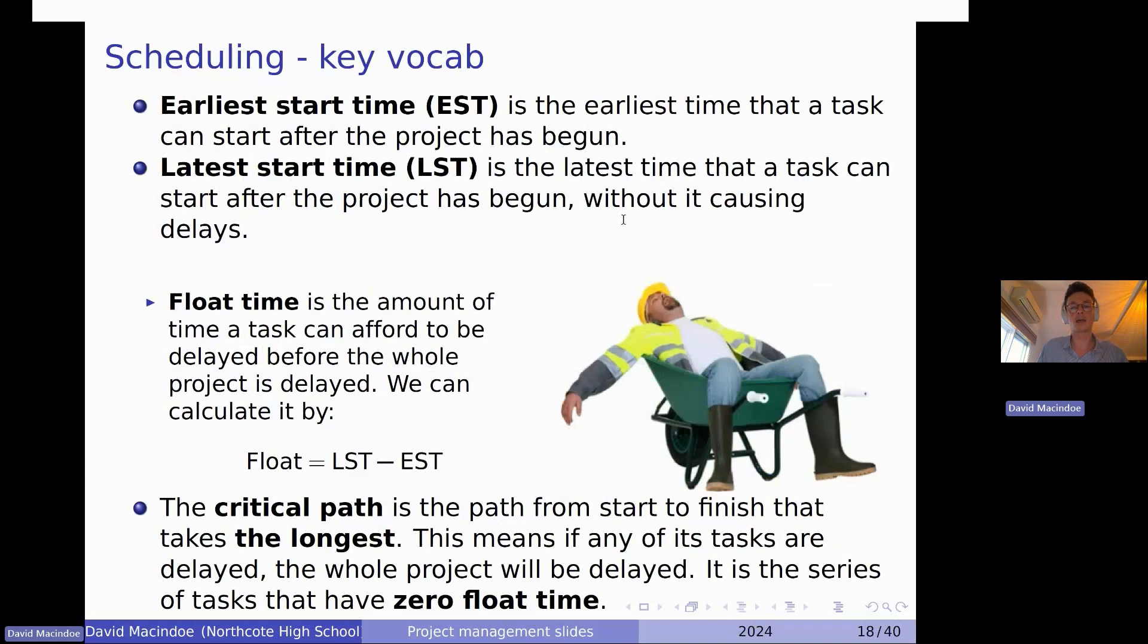And then the critical path, I think the easiest way to understand it is just to understand it as it's the longest path that goes from your start vertex all the way to your finish vertex. So it's the stuff that overall takes the most amount of time. It means that those are the things that you can't allow for any delays. There's no float time there. You've got to have all of those immediately start after their predecessor has finished, or otherwise you're going to introduce delays into your project.